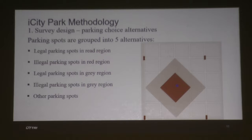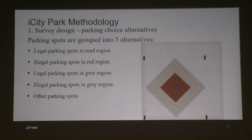Parking spots in the network are classified into five alternatives based on location and type. Alternatives one and two are legal and illegal parking spots in the red region, relatively closer to the destination — within one block away. Alternatives three and four are legal and illegal parking spots in the green region — a little farther away, within two blocks. All other parking spots are grouped into the fifth alternative, considered invalid because respondents who park there would not reach the destination within the time frame.